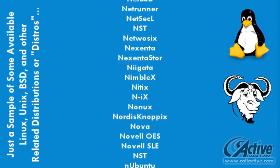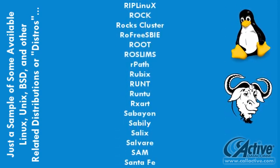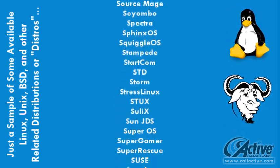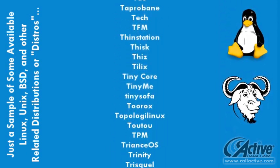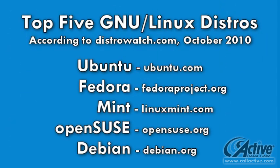According to distrowatch.com, a site that aggregates news and details about distributions of Linux, BSD, and other operating systems, the top five most popular distros are as follows: Ubuntu, available at ubuntu.com; Fedora, available at fedoraproject.org; Mint, available at linuxmint.com; OpenSUSE, available at opensuse.org; and Debian, available at debian.org.